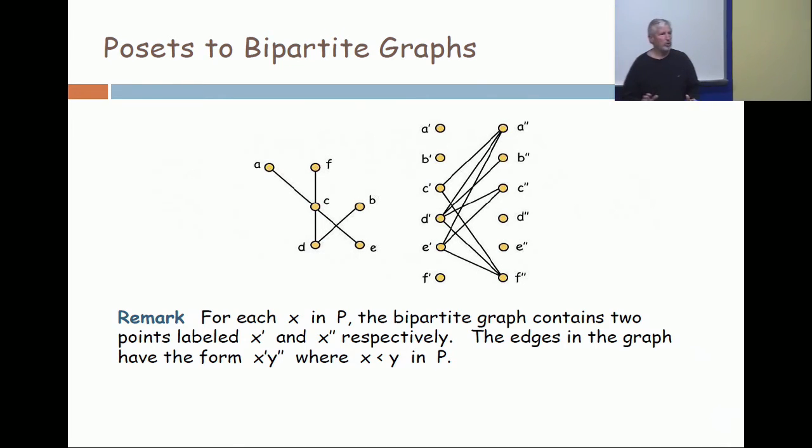Is the construction of this bipartite graph clear? If I were to give you next Tuesday a poset on 6, 7, 8, 9, 10, 12 points and ask you to draw this graph, could you do it?